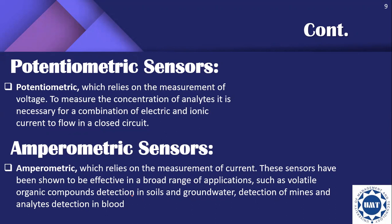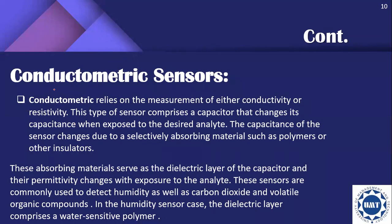Conductometric sensors rely on the movement of either conductivity or resistivity. This type of sensor comprises a capacitor that changes its capacitance when exposed to an analyte. The capacitance changes due to a selectivity material, such as polymers or other insulators, which serve as the dielectric layer of the capacitor, and their permittivity changes when exposed to the analyte. These sensors are commonly used to detect high humidity, carbon dioxide, and volatile organic compounds.